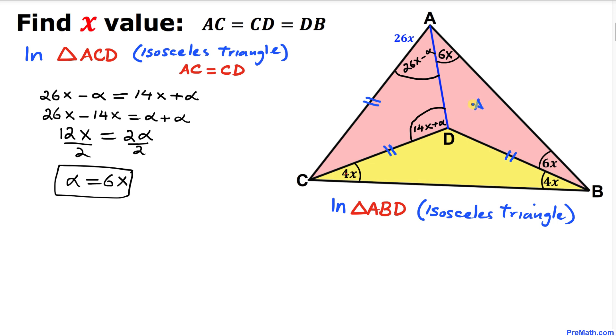Now let's focus on this triangle ABD. We know that this angle is equal to this angle. That's the reason why this triangle is an isosceles triangle.